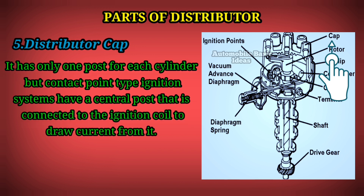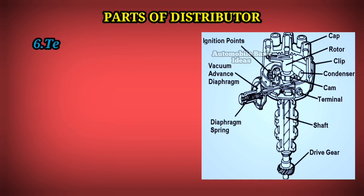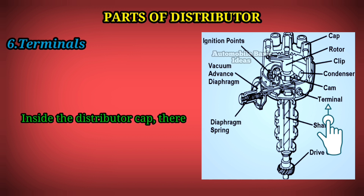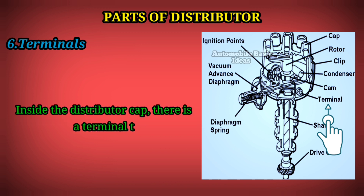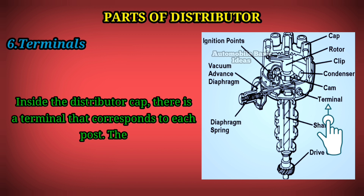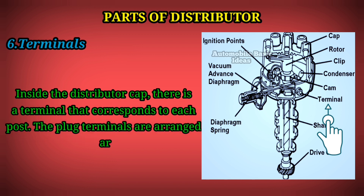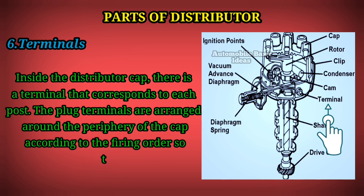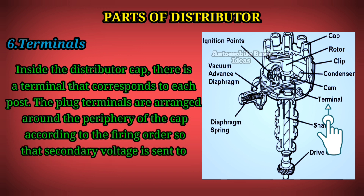6. Terminals: Inside the distributor cap there is a terminal that corresponds to each post. The plug terminals are arranged around the periphery of the cap according to the firing order, so that secondary voltage is sent to the appropriate spark plug at the correct time.